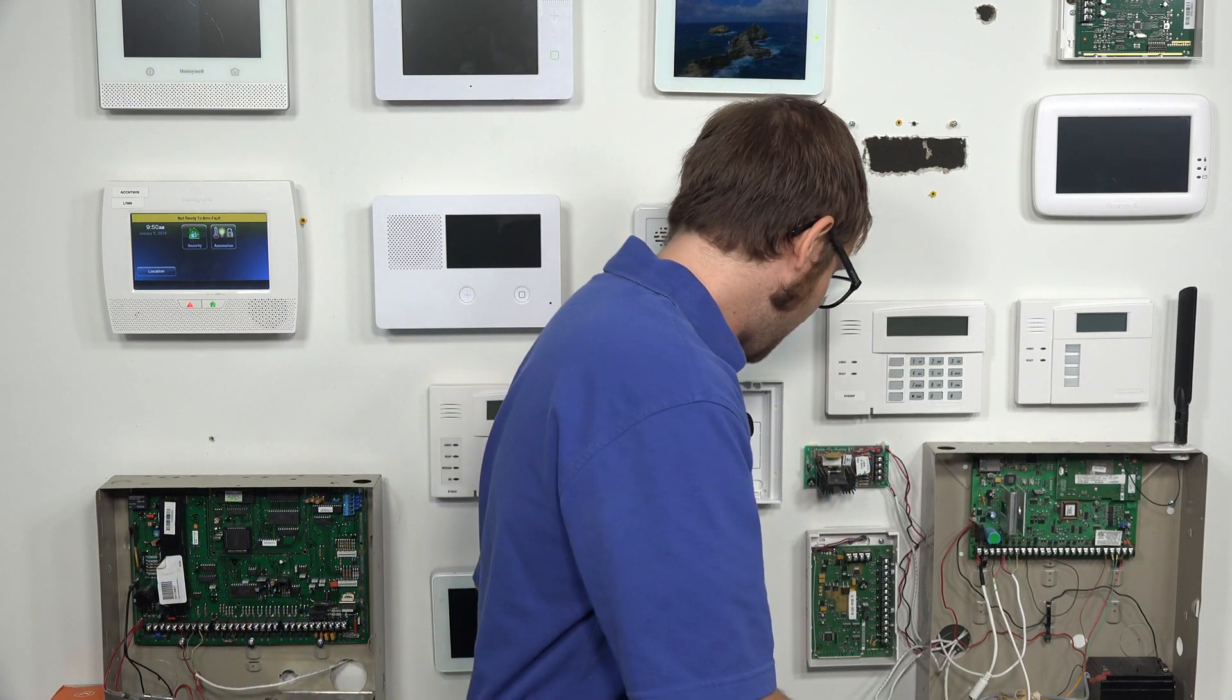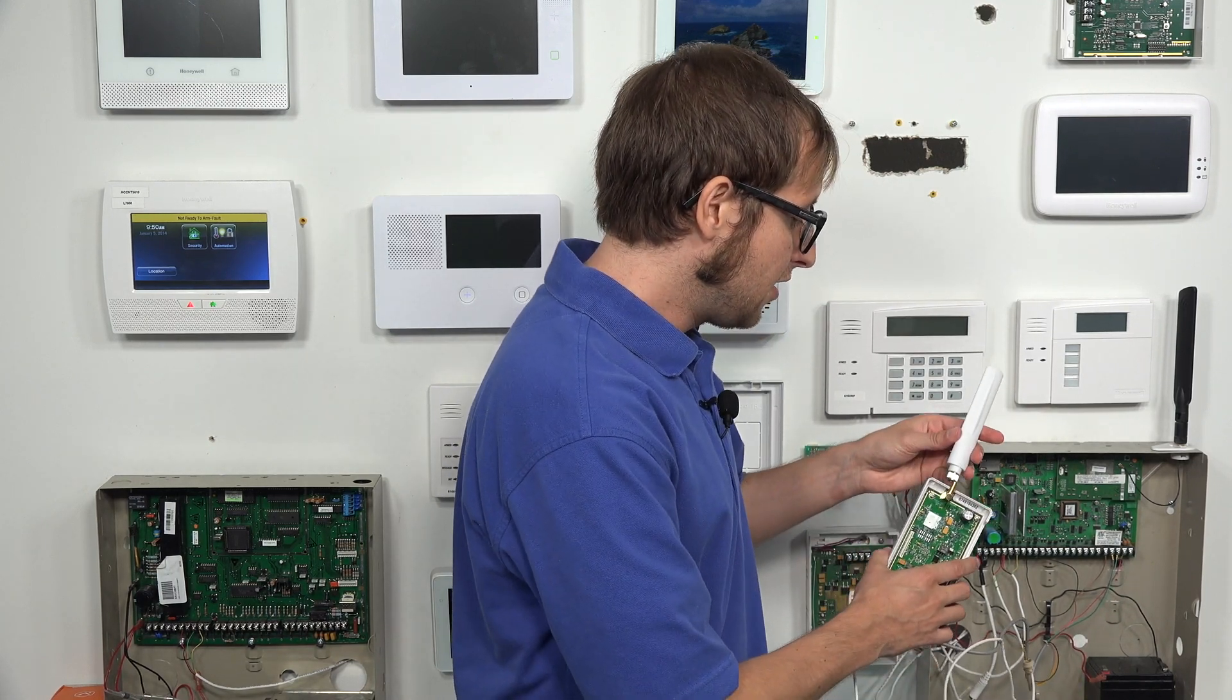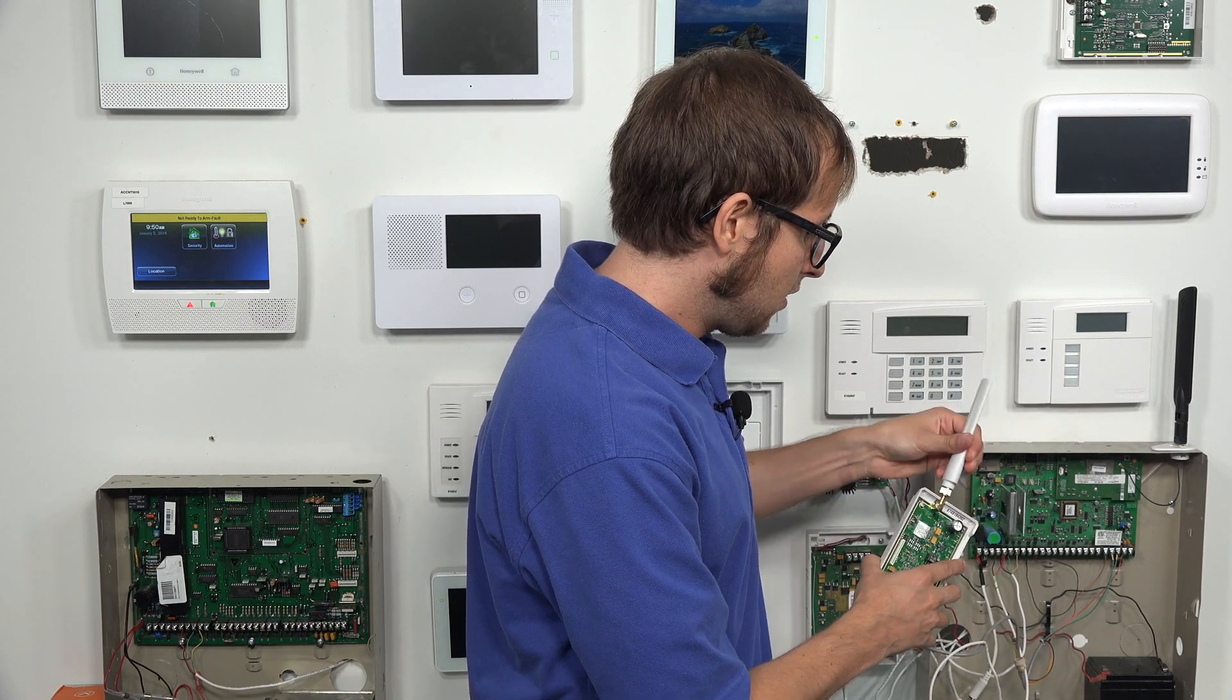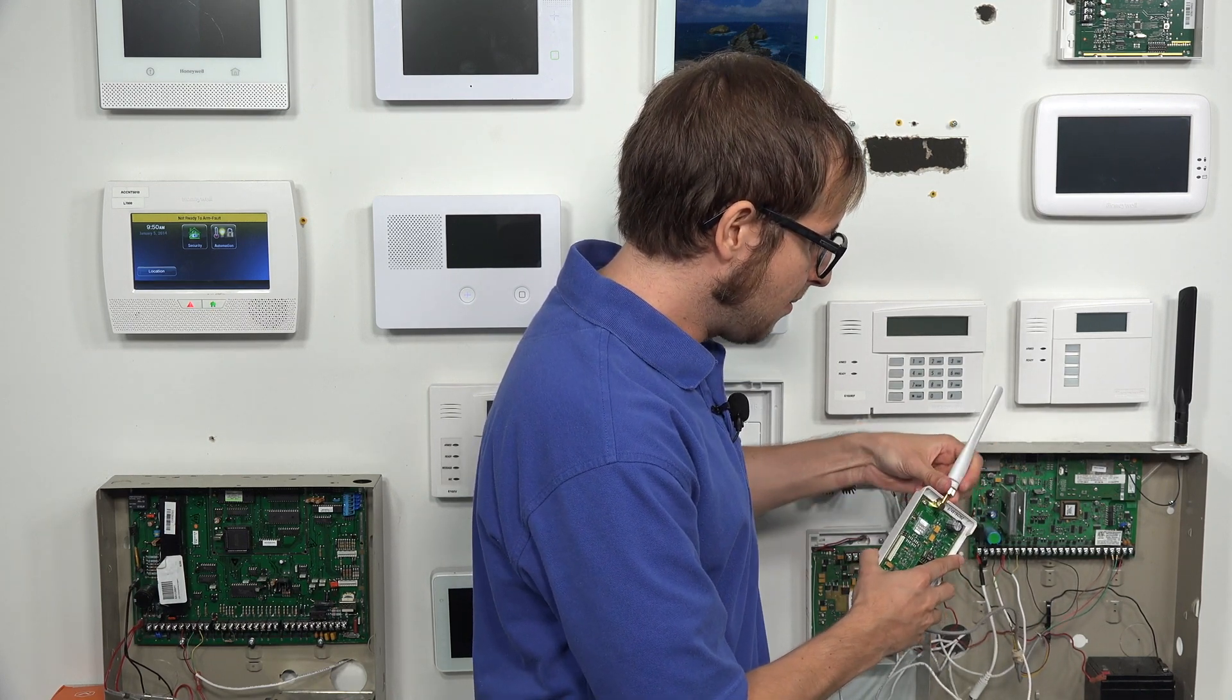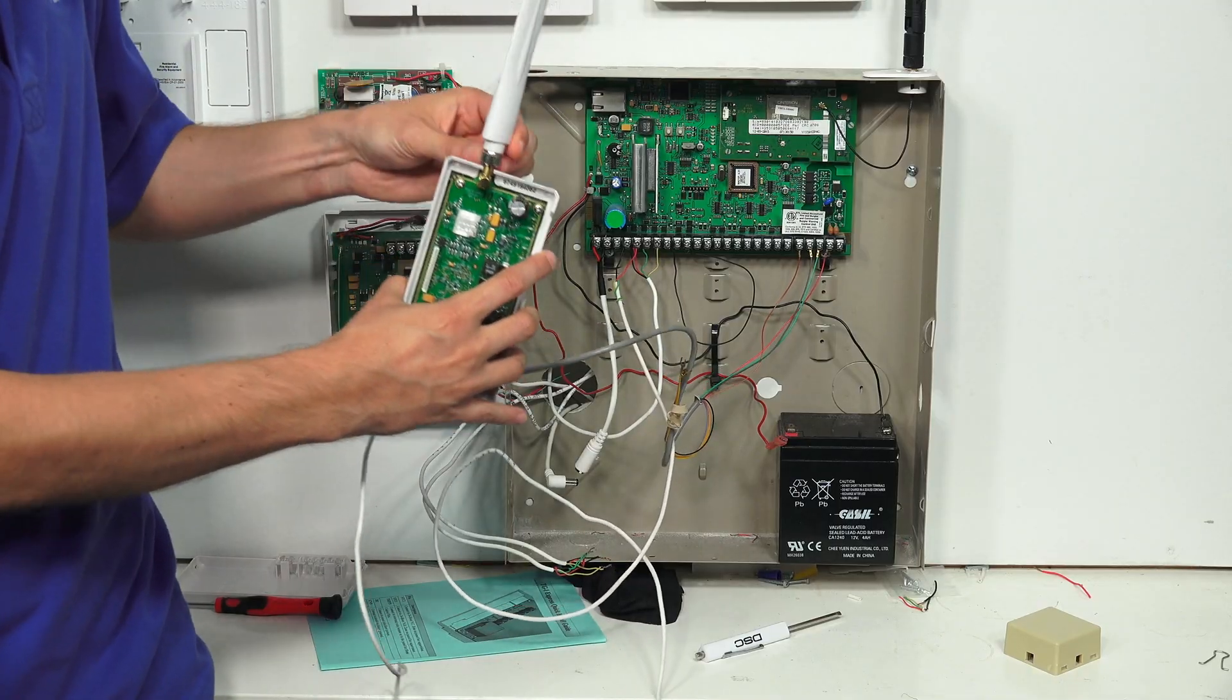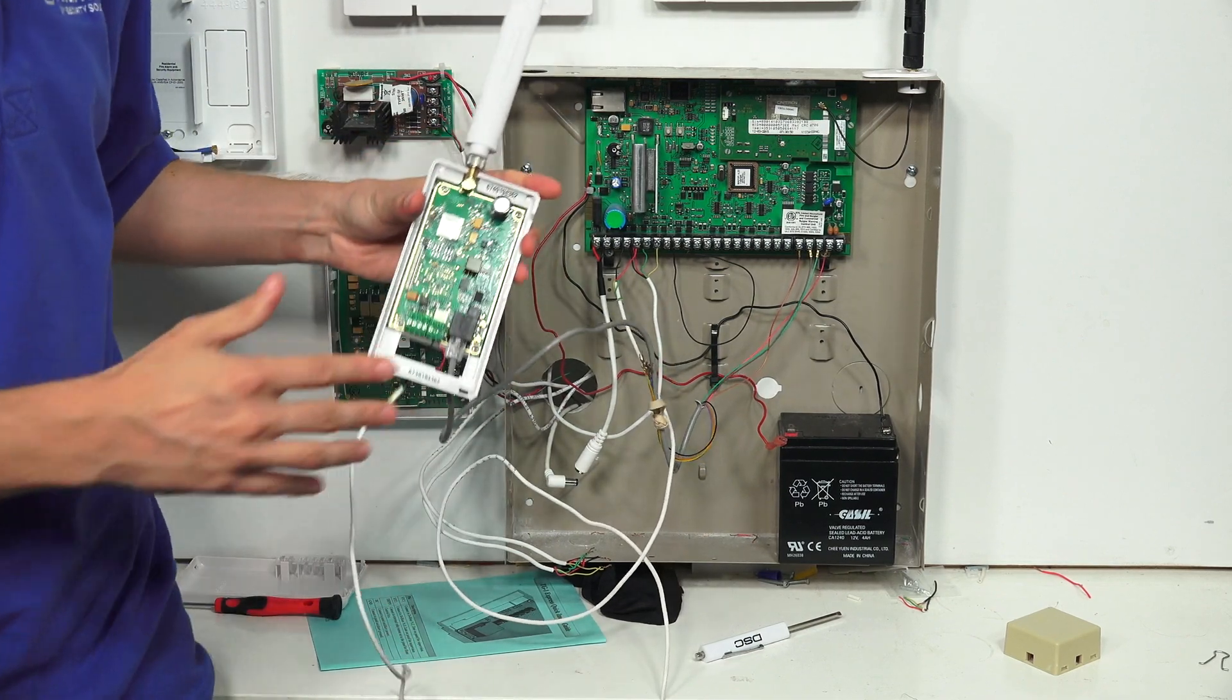The next thing to do is to connect the antenna. So we have our antenna here, and this helps get the best signal possible. You can just take it and twist it into place. You want to twist the metal part there. Once it stops twisting, you know it's nice and secure.